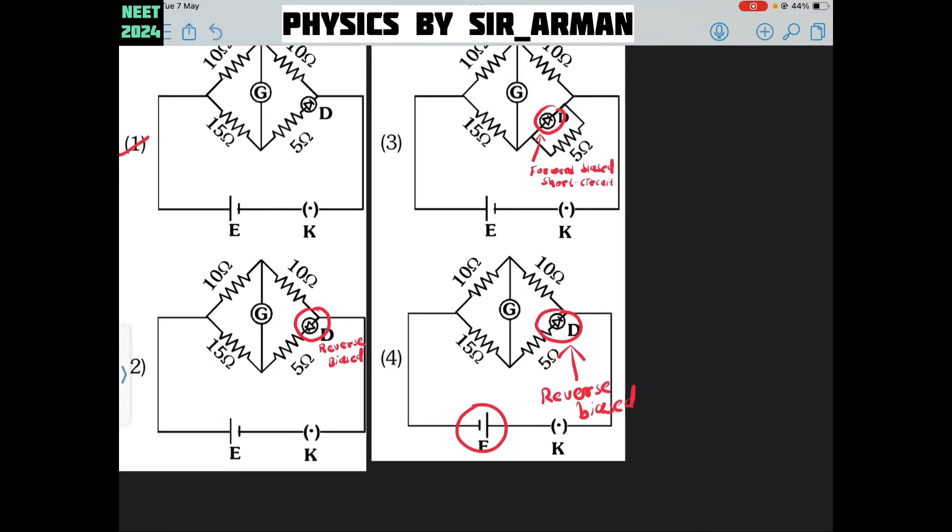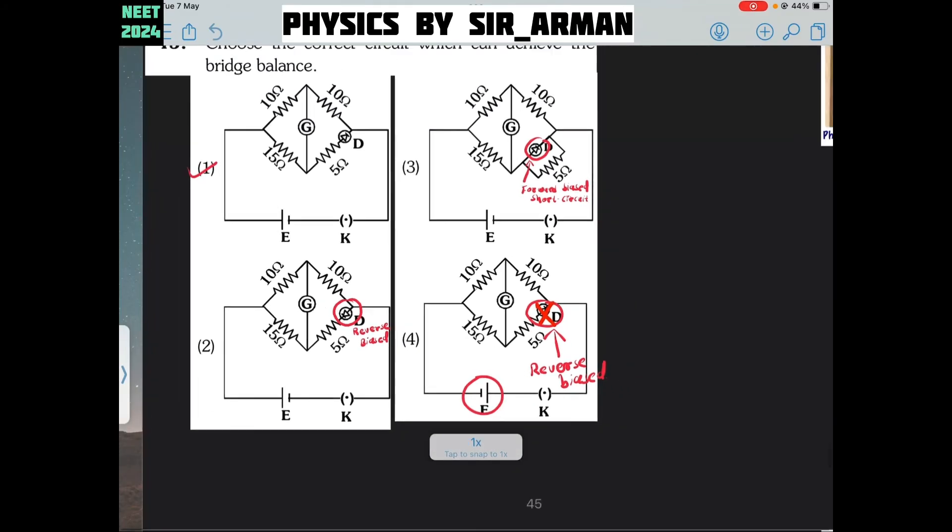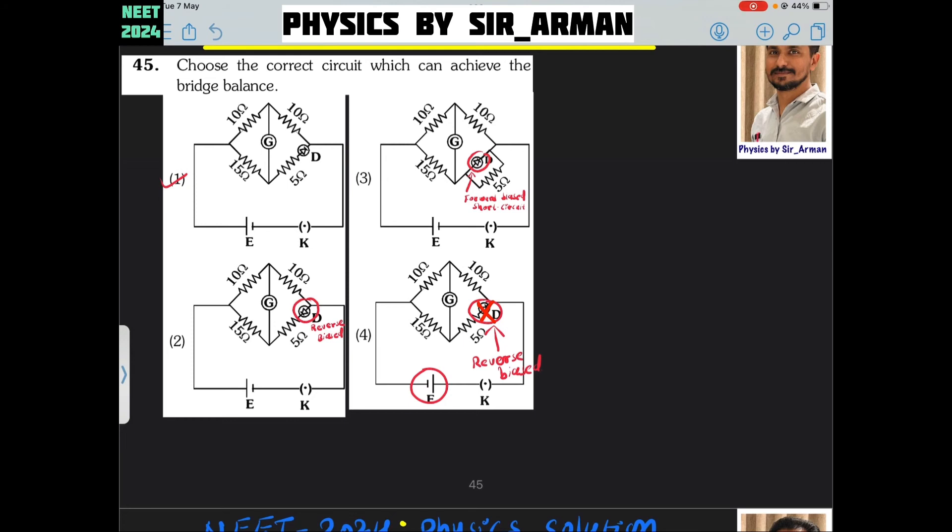For this fourth one, here it is positive. And here this diode is connected such that its negative terminal is connected with the positive. Means it is reverse biased. So reverse bias provides infinite resistance. So it has very high resistance. Again, so this cannot be used to achieve balance with Wheatstone bridge.